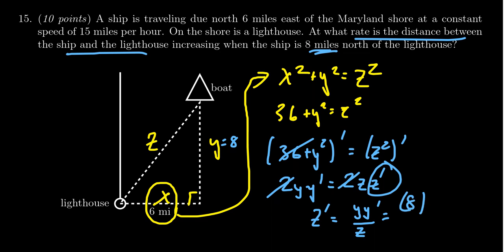What about y prime? Well, y prime would be the speed, the boat's going up the coastline, which that was also given to us as 15 miles per hour. Notice that y would be increasing over time, so that's a positive 15 miles per hour, so we get positive 15 right there.